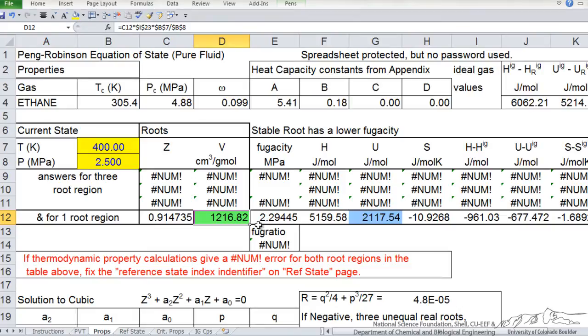And so now the spreadsheet has calculated the initial internal energy which is in blue, joules per mole, and the initial volume which is in green, and notice that there is two possibilities, there is a three root region and a one root region, and we are in the one root region in this case. So we now have the initial internal energy which was listed on our starting page of the screencast, and the initial volume.